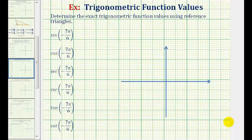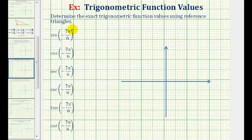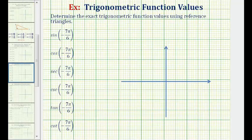We want to determine the exact trigonometric function values using reference triangles. We want to find the six trig function values for negative seven pi over six. Notice how the angle is negative, which means we'll rotate clockwise from the positive x-axis, and the angle is also given in radians. We'll keep this in radians and sketch negative seven pi over six in standard position, form the reference triangle, and then determine the six trig function values.